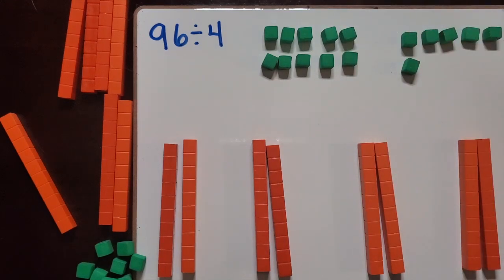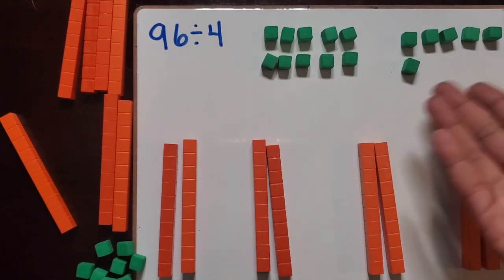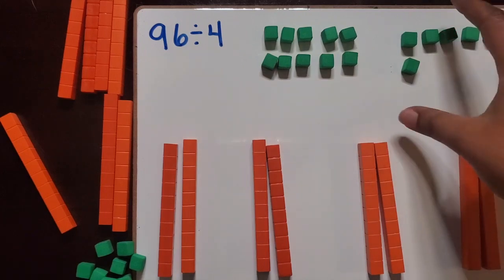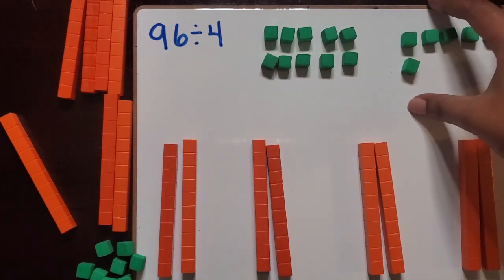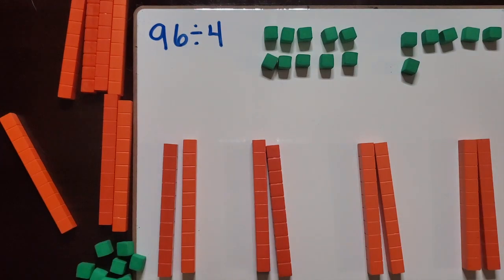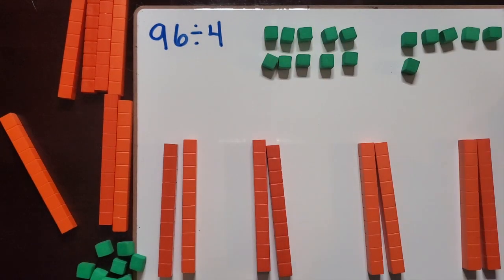So you would want them to recognize how many ones do we have? Now we have 16 ones, making sure that they don't mix up the original six ones with the ones that we just regrouped. We have 16 ones.